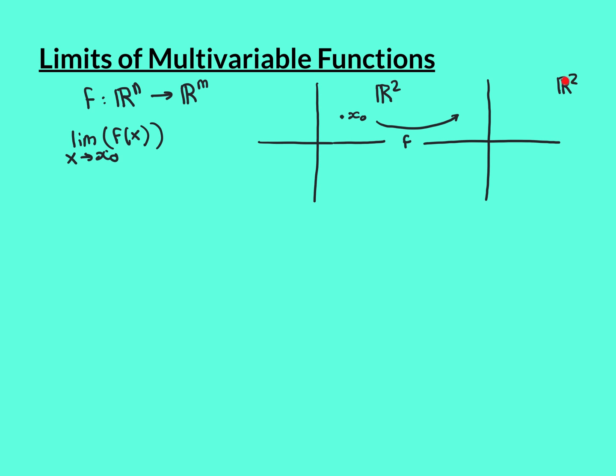Here is our domain R2, here is our codomain, also R2, and here is our point x0, which is some vector in R2. We can look at where the function maps x0 onto in R2. When asking about the limit as x approaches x0, what we're really interested in is: as you get closer and closer from all different directions, and you look at what those points close to x0 are being mapped onto in R2, is there some point in the codomain that the image of these points is getting closer and closer to? If that point is the value the function maps x0 onto, that would be the definition of the function being continuous at that point, analogous to the single variable case.